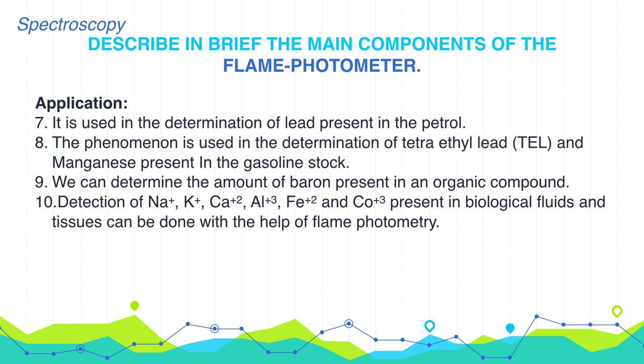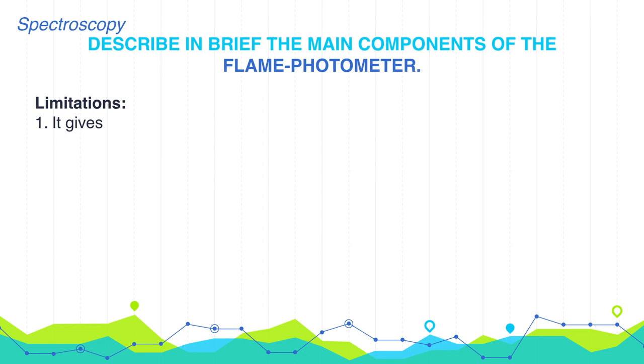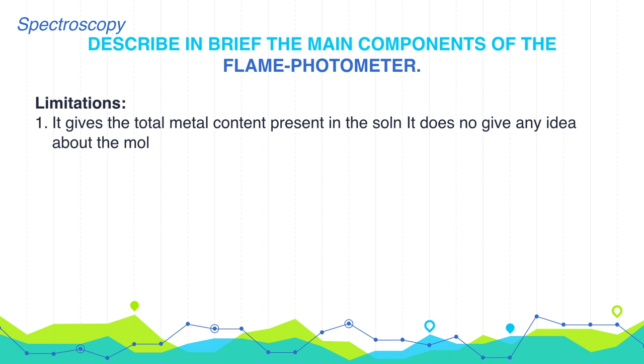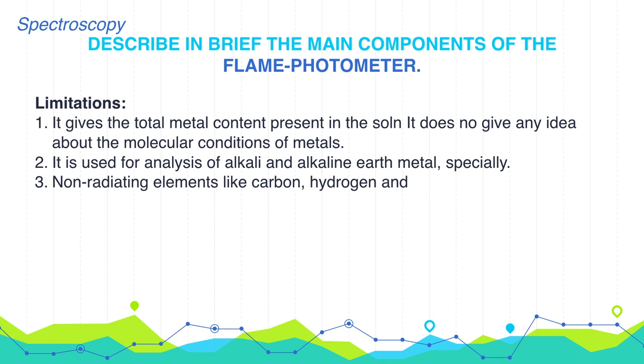But this method is also having some limitations. It gives the total metal content present in the solution. It does not give any idea about the molecular condition of the metal. It is used for analysis of alkali and alkaline earth metals specially. Non-radiating elements like carbon, hydrogen, and halogen cannot be detected by this method. Only solutions can be analyzed.